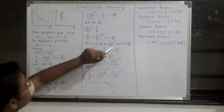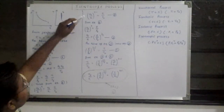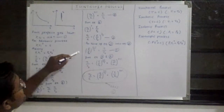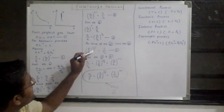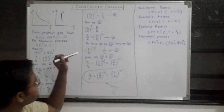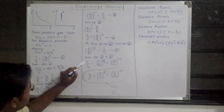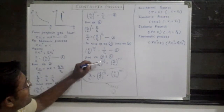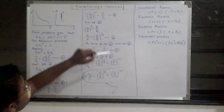Now substituting the value of equation number 4 into equation number 3: instead of V2 by V1, we put P1 by P2 raised to 1 upon gamma, raised further to gamma minus 1, giving us P1 by P2 raised to (gamma minus 1) upon gamma. This also equals T1 by T2. So from equations 3 and 5, we get T1 by T2 equals P1 by P2 raised to (gamma minus 1) upon gamma, and V2 by V1 raised to gamma minus 1.